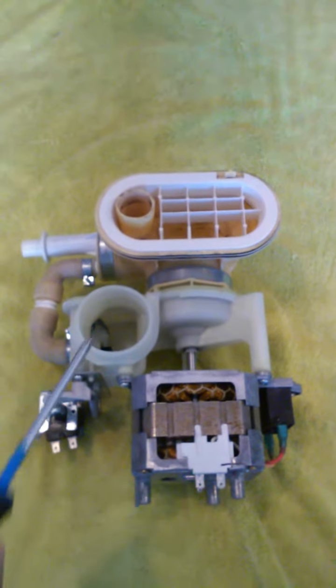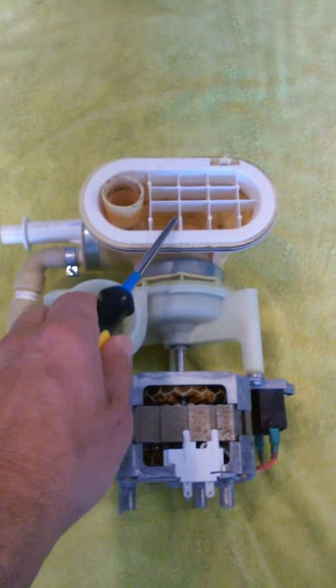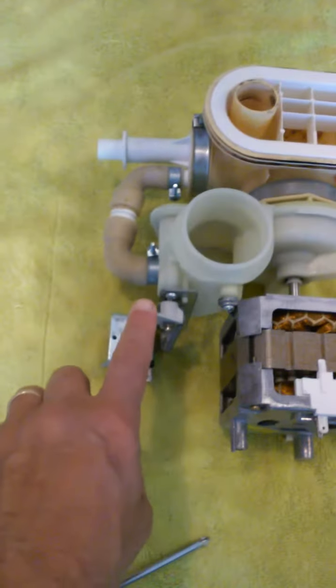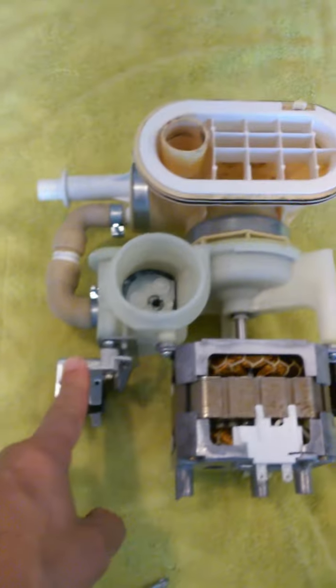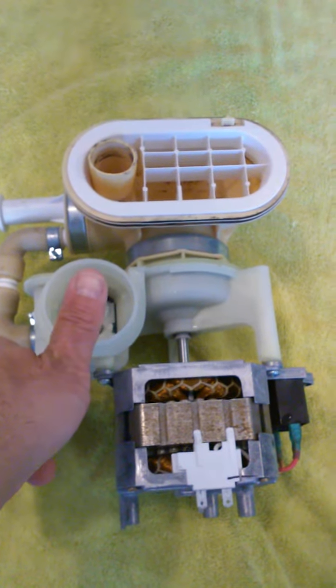Now what happens when we need to drain the water out of the dishwasher? Water comes in through the pump. We have our directional solenoid that activates a flapper to close this opening so the water does not go back into the sprayers.